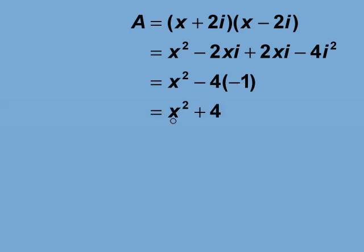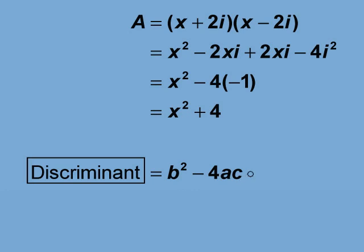This simplifies to x squared plus 4. Now we can calculate the discriminant. There is no x term, so the b value is zero, the a term of 1 goes here, and the c value of 4 goes here.